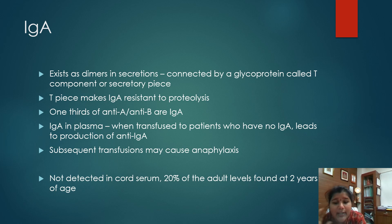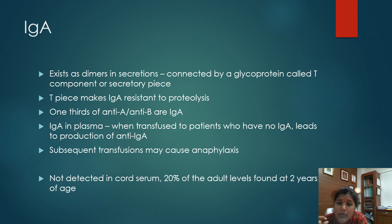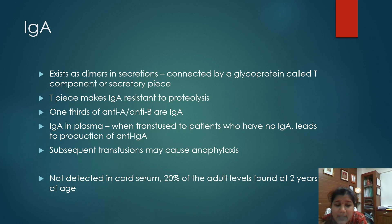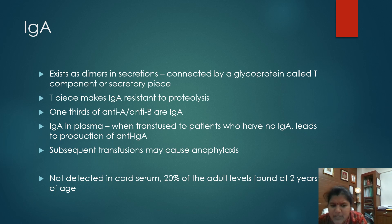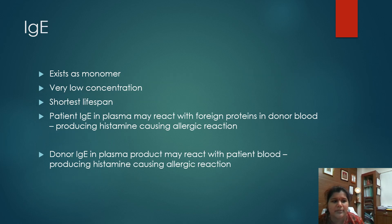For example, if there is a patient who does not produce IgA in their blood and we give an FFP component, that FFP component contains the donor's IgA. This IgA is foreign to the patient, so the patient will start developing anti-IgA — an antibody against IgA. Subsequent transfusion with plasma or FFP containing IgA will cause anaphylaxis in the patient. IgA is usually not detected in the fetus or in cord serum, and only 20% of adult levels are found when the child reaches 2 years of age.